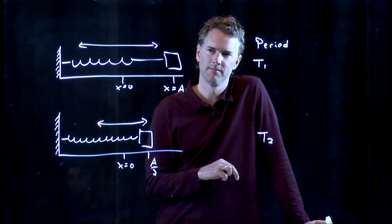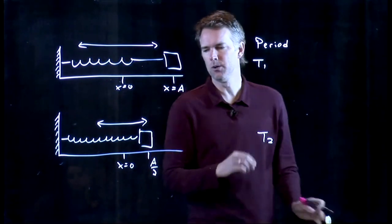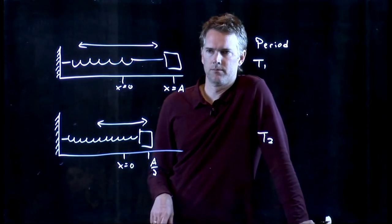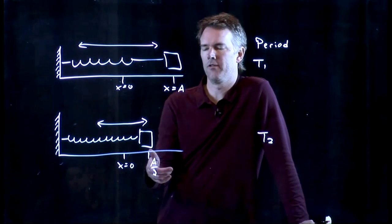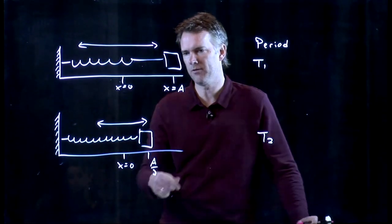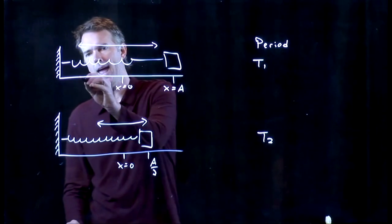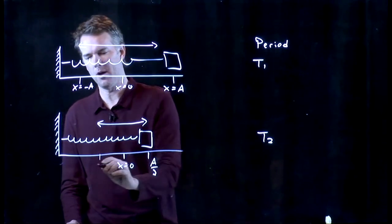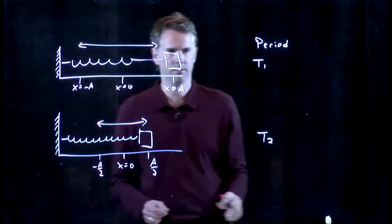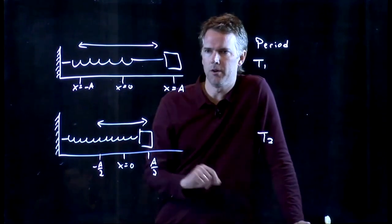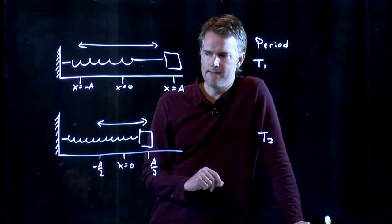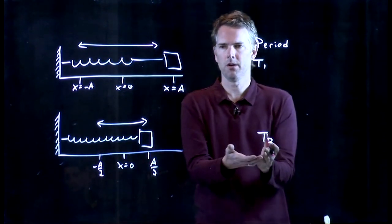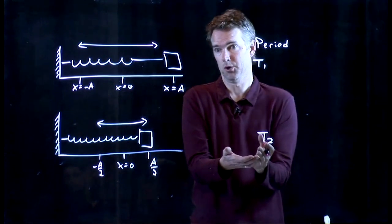Would T2 be half as much? Okay. Why would you say that T2 is half as much? Because A is divided by 2. Yeah, because A is divided by 2, right? It seems like it doesn't have to go as far, right? This one had to go from A all the way to negative A. And this one had to go from A over 2 to negative A over 2. So it clearly didn't have to go nearly as far, right? If it doesn't have to go as far, it seems like the period should probably be shorter, I guess.